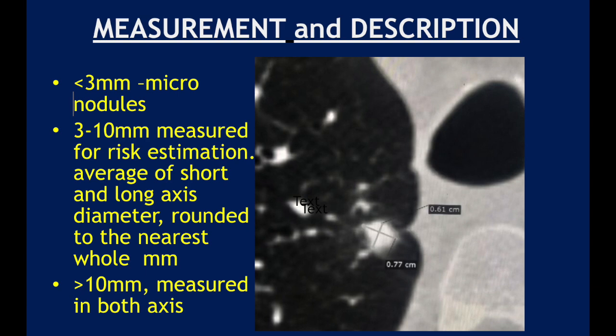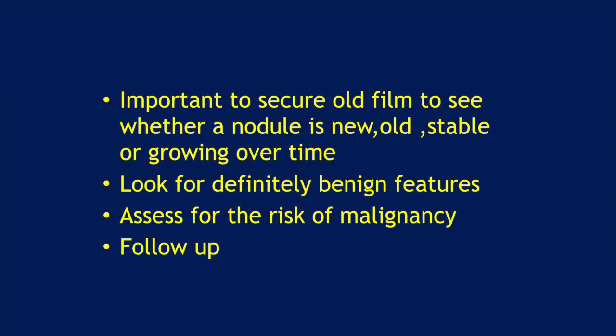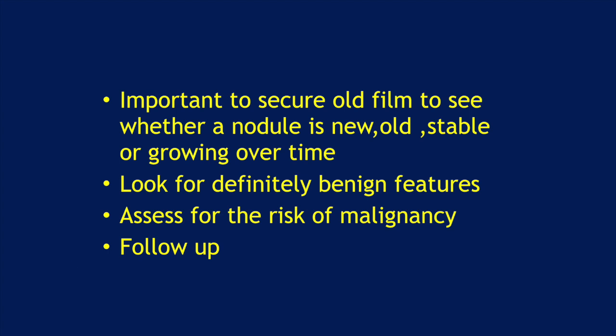Once you see a SPN, what is the first thing you need to do? It is important to secure old films to see whether a nodule is new, old, stable, or growing over time. Then we look for definitely benign features. If there are benign features, there is nothing to worry about. If there aren't, then we have to assess for the risk of malignancy and follow it up accordingly.